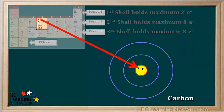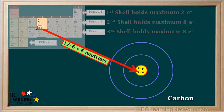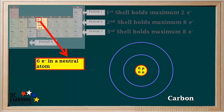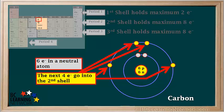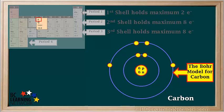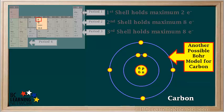Carbon has six protons, and the most common isotope has 12 minus 6, or 6 neutrons. A neutral atom of carbon has six electrons: two in the first shell and four in the second shell. One possible Bohr model shows an electron pair and two unpaired electrons in the second shell. Another possible Bohr model shows all four electrons in the second shell as unpaired — this model is often used for carbon atoms when they are in molecules.